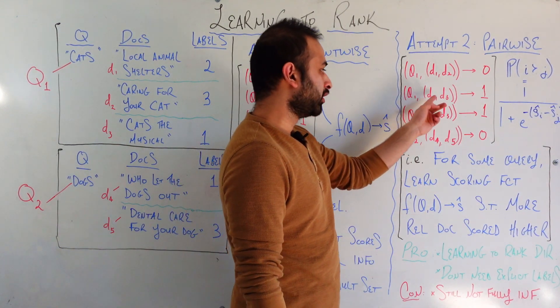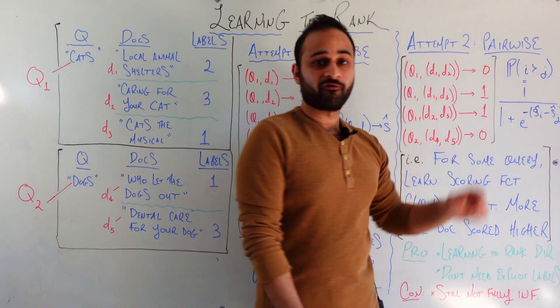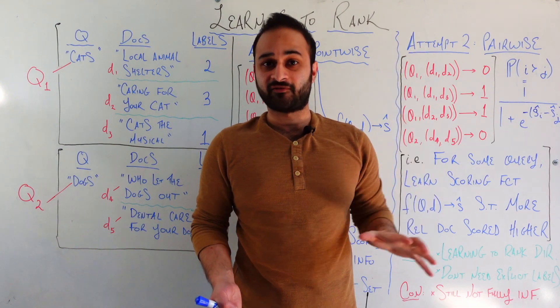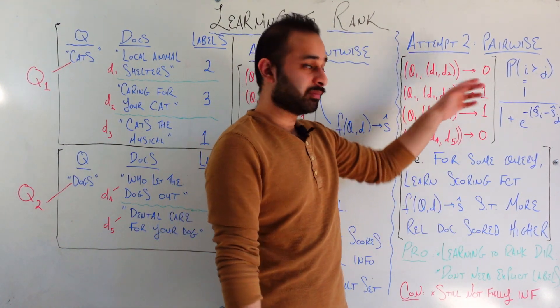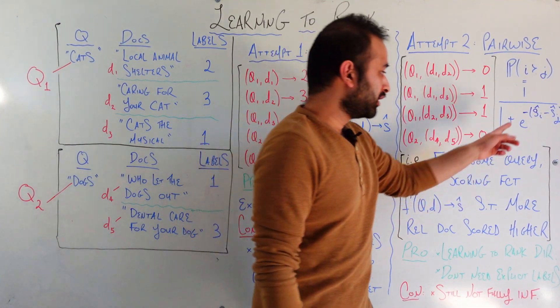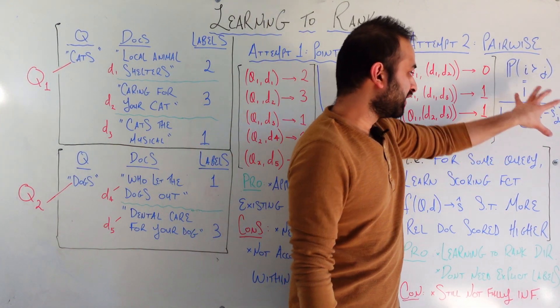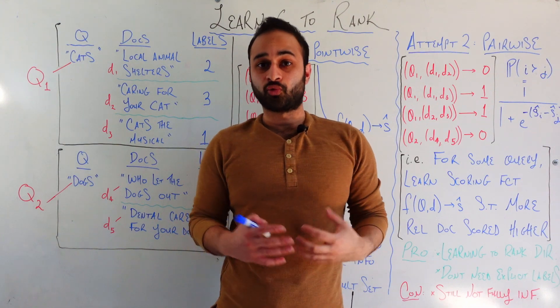Conversely, if we're looking at the document pair D1 and D3, we want this probability to be as high as possible because in fact, document 1 is actually more relevant than document 3. Therefore, we're going to try to find a scoring function such that this form becomes as close to 1 as possible.